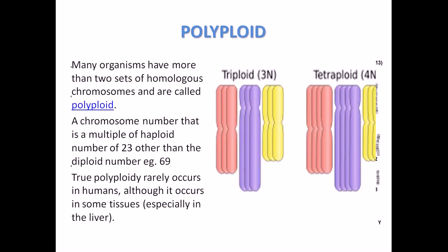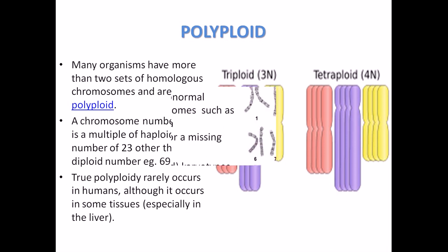On the other hand, for polyploidy there is an increment in the number of sets. Usually in humans it occurs in certain tissues — especially in liver cells — where you can see polyploidy occur.